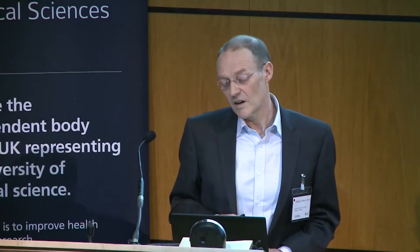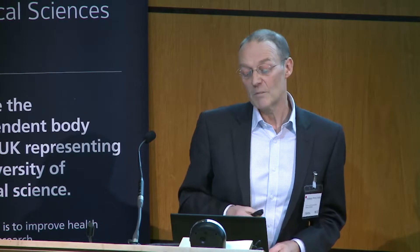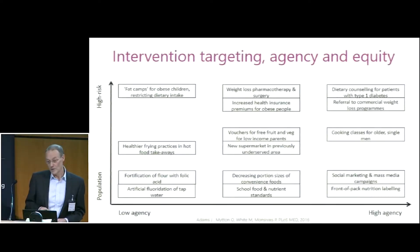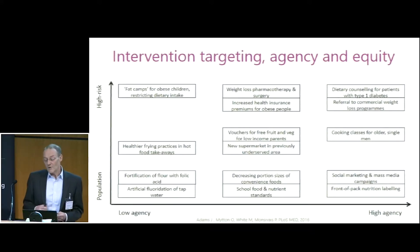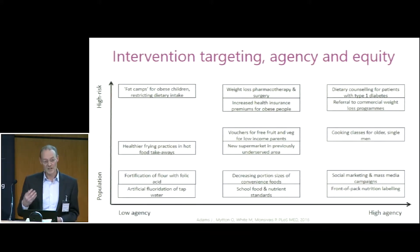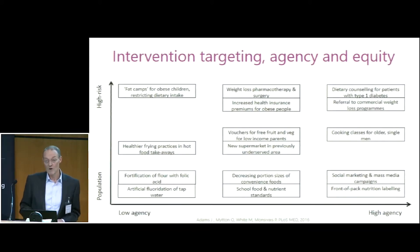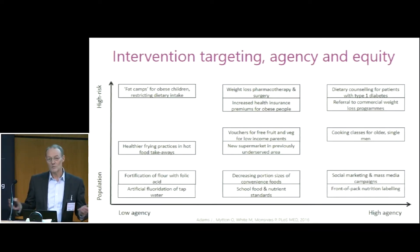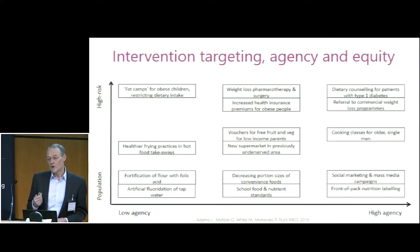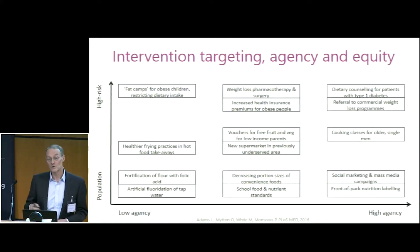The other important thing about population interventions is that they seem to be better at maintaining health equity or reducing health inequalities. On this intervention plane from our paper in PLOS Med in 2016, a range of interventions to change diet are mapped out. On the y-axis is population versus high-risk interventions, and on the x-axis is the extent to which interventions make demands on the individual — the extent to which an individual needs to engage with the intervention for it to work. For example, front-of-pack nutrition labelling applies to everyone, but it requires individuals to be literate, numerate, able to make rational choices about which foods to choose, and to have the resources to choose healthier foods, which are often more expensive.